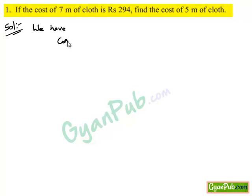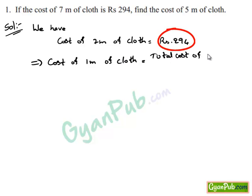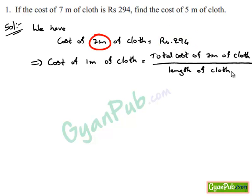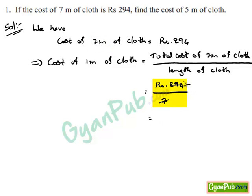We have cost of 7 meters of cloth, which is equal to Rs. 294. This implies cost of 1 meter of cloth is nothing but total cost of 7 meters of cloth divided by length of cloth. This is equal to Rs. 294 divided by 7 meters.